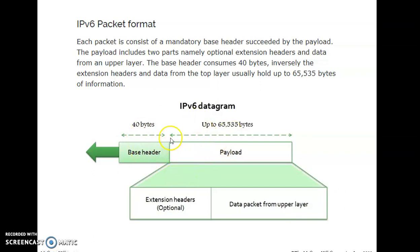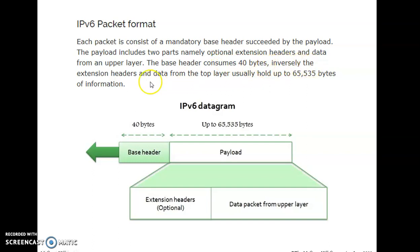In IPv6, the header is referred to as the base header. Recall that in IPv4 the header size was minimum 20 bytes and maximum 60 bytes. But in IPv6 the header is fixed at 40 bytes. Each packet consists of a mandatory base header succeeded by a payload. The payload includes two parts: the optional extension header and data from an upper layer. The extension header and data typically hold up to 65,535 bytes of information.